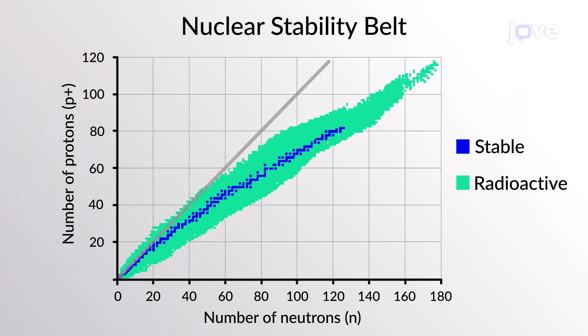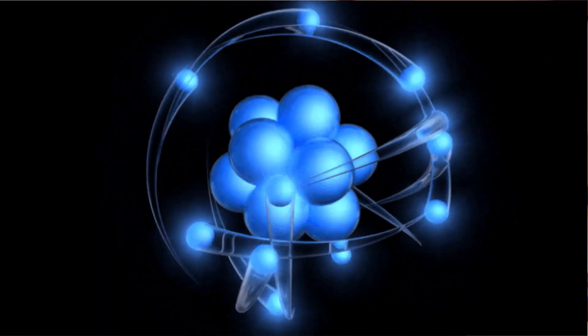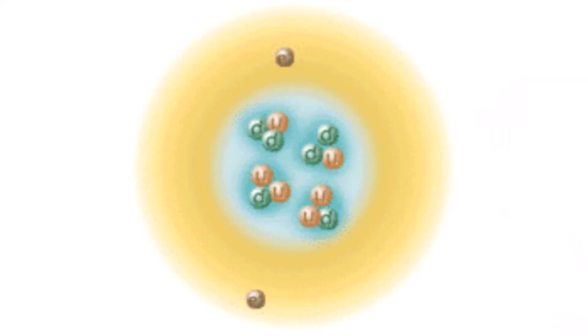Now, you might be wondering why does all this happen? Well, it's all about the desire for a more balanced and stable nucleus. In the end, nature has its own way of maintaining harmony, even at the microscopic level. From the release of a beta particle to the underlying search for stability, it's a complex dance happening right at the heart of the atom.